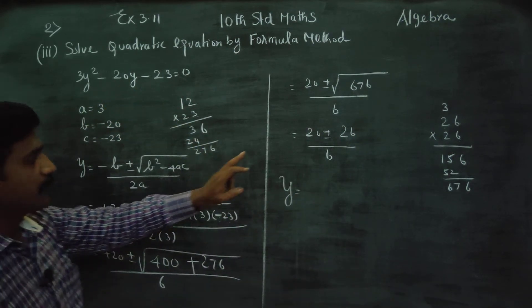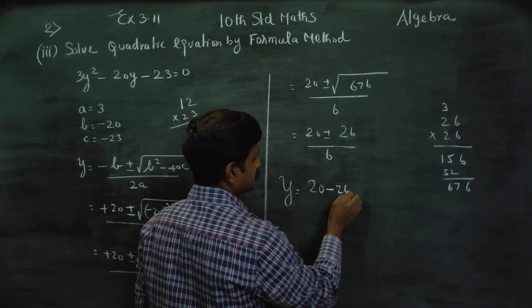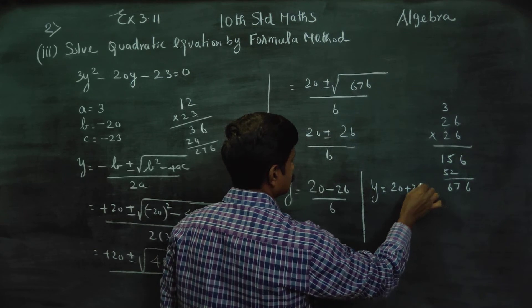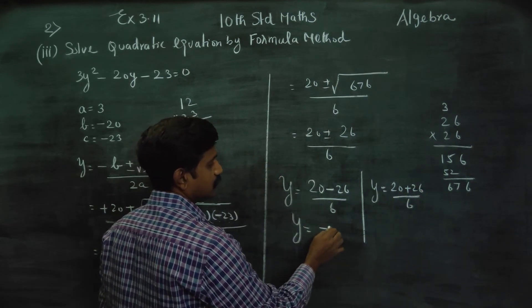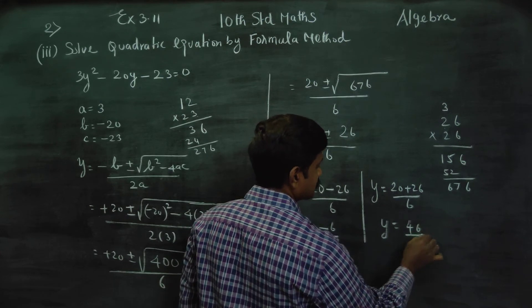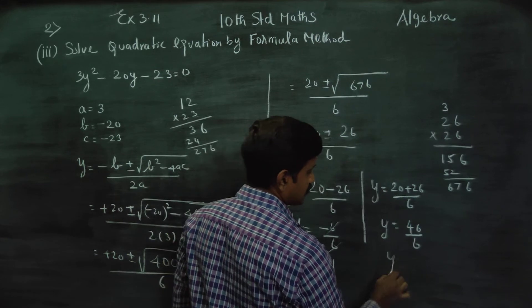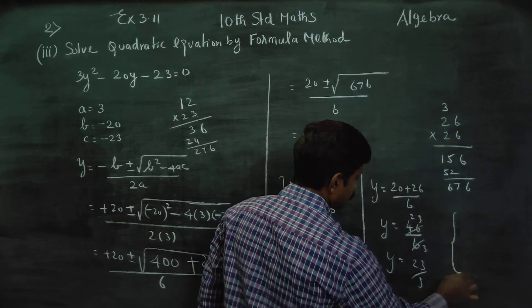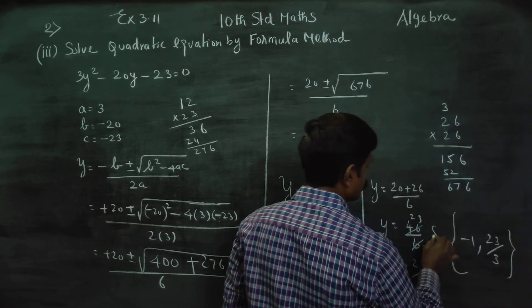Y is equal to 20 plus 26 by 6, or 20 minus 26 by 6. Cancelling, the first solution gives minus 1, and the second gives 23 by 3.